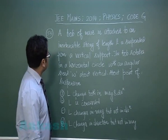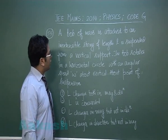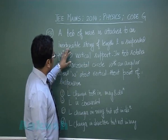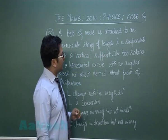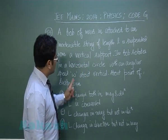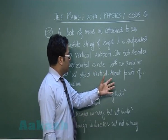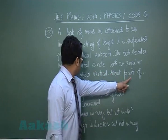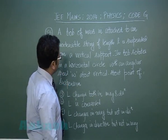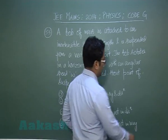Let's go to question number 35, which has been picked from rotational motion. A bob of mass M attached to an inextensible string of length L is suspended from a vertical support. The bob rotates in a horizontal circle with angular speed omega about the vertical. The whole thing describes a conical pendulum, and we have to analyze the point of suspension.